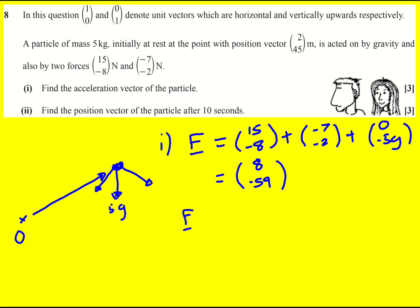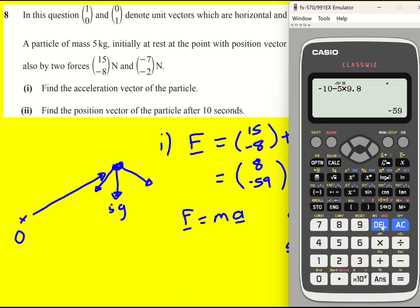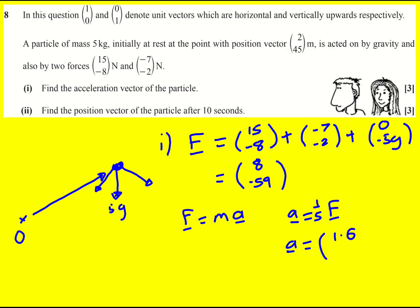So F equals ma. Newton's second law of motion, just writing it in vector form within two dimensions. And therefore a is going to be F divided by 5, or 1 fifth F. So just need to then divide 8 by 5, which gives 1.6, and then divide -59 by 5, which is -11.8. And that is our acceleration vector.